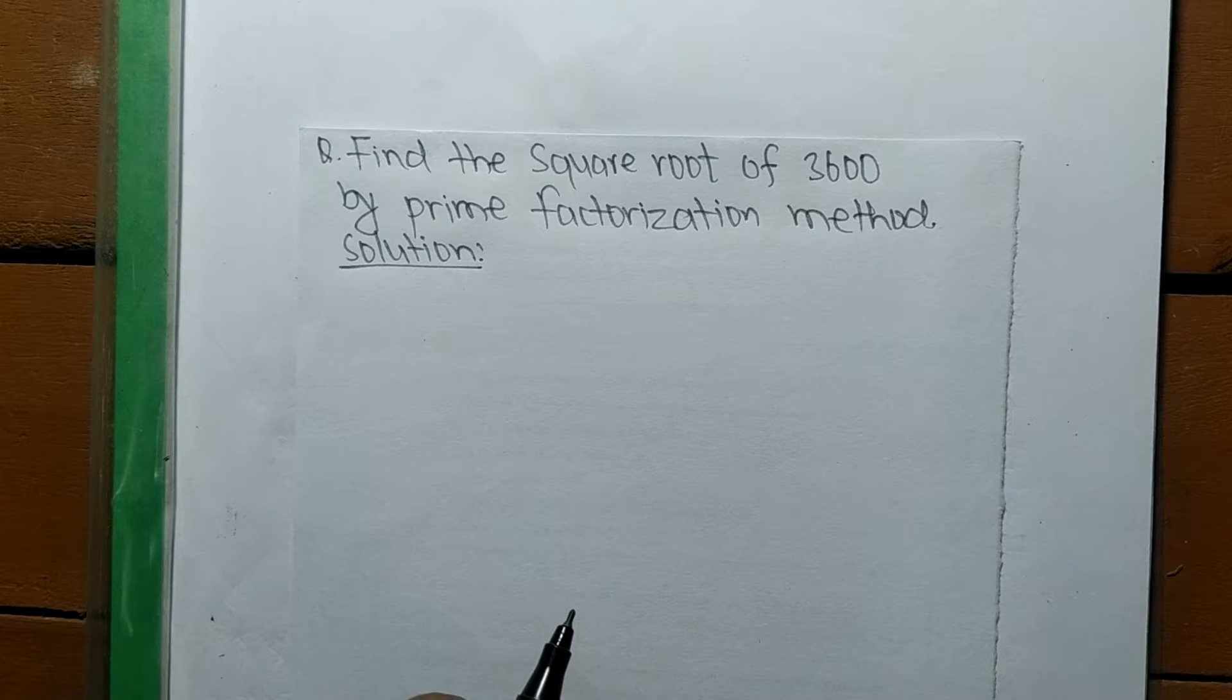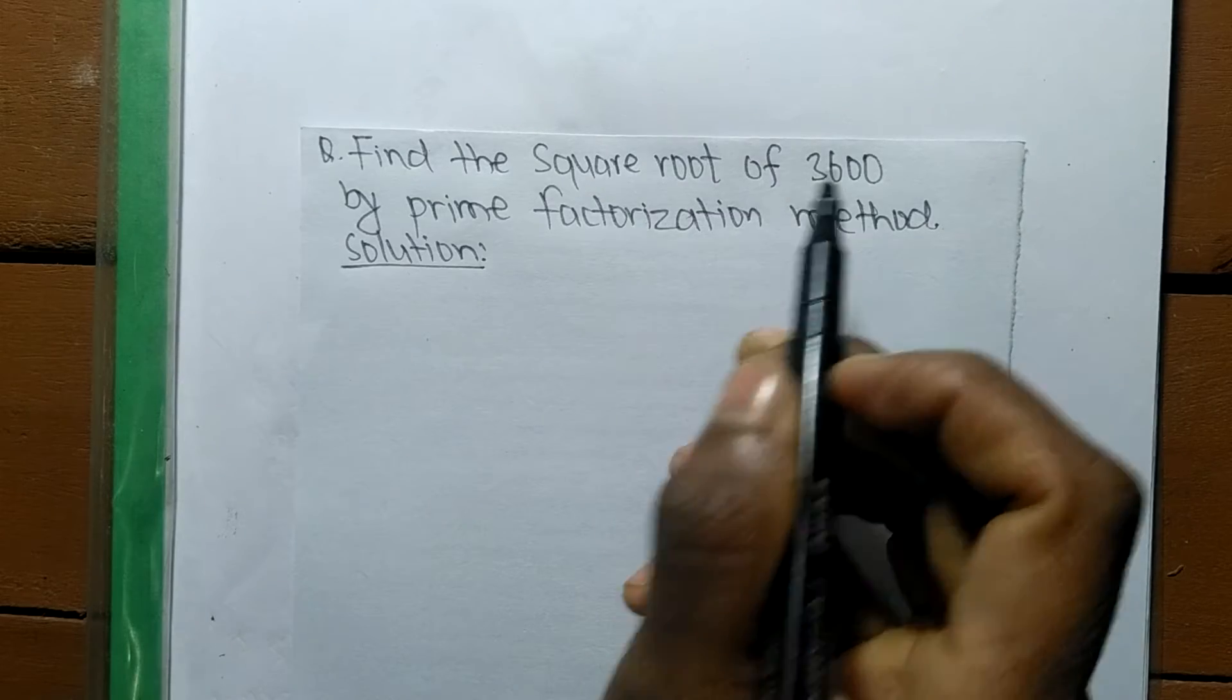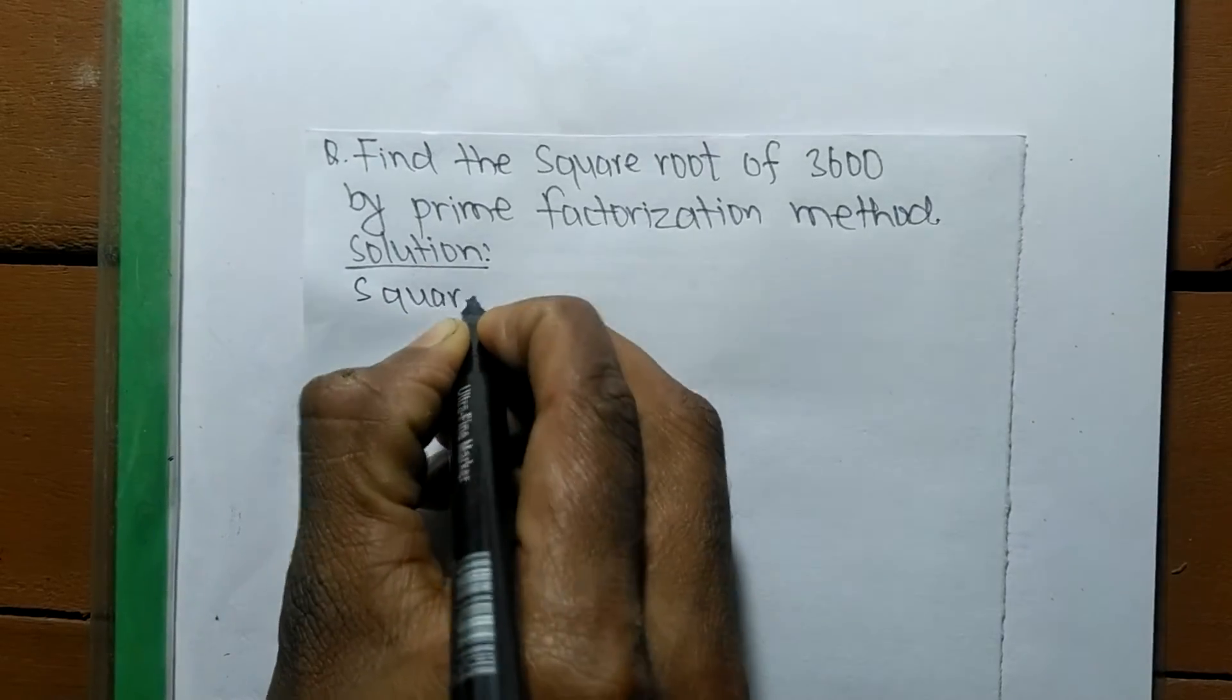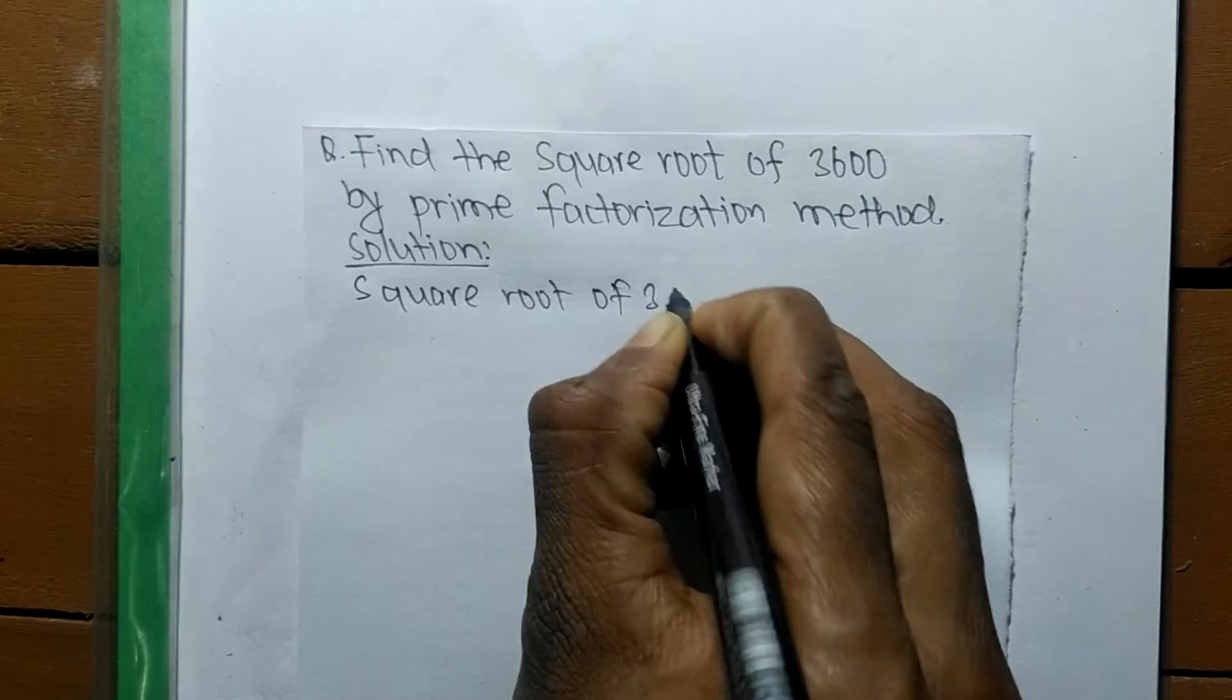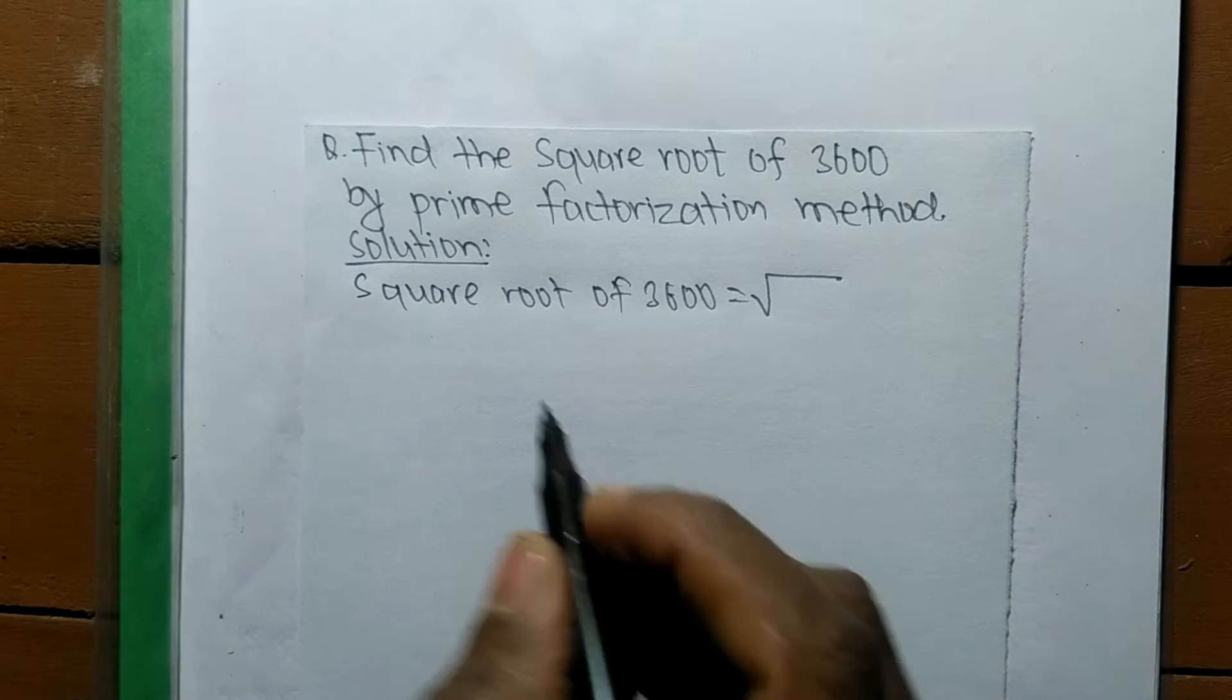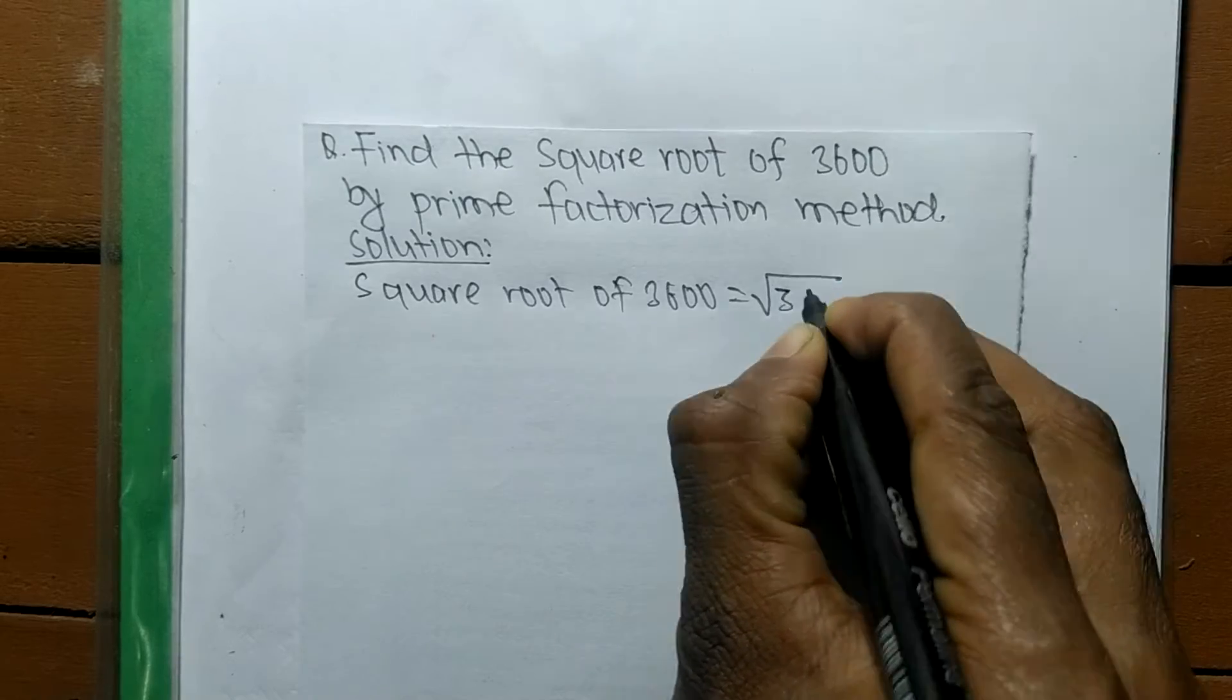Today in this video we shall learn to find the square root of 3600 by prime factorization method. Square root of 3600 is equal to - this sign is the sign of a square root - and we are finding the square root of 3600.